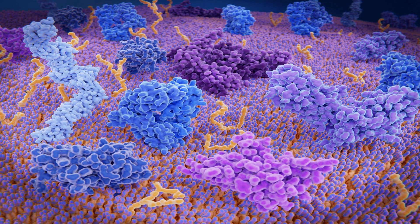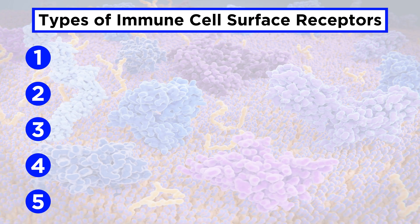There are hundreds of different surface receptors, such that we could devote a whole series to these proteins and not get through them all. So for brevity, let's focus on five main categories of immune cell receptors.